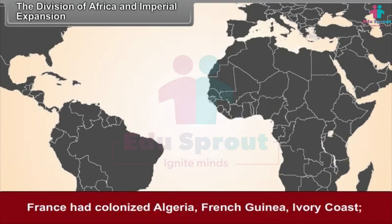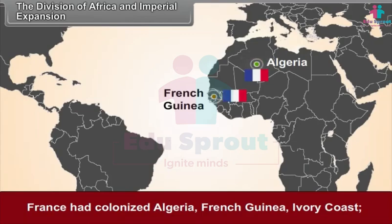France had colonized Algeria, French Guinea, and Ivory Coast, whereas Portugal brought under its control Mozambique and Angola. The status of becoming the first colonizer in the African continent went to Belgium by establishing its colony in Africa in the second half of the 19th century. King Leopold of Belgium erected a colony in the Congo River Basin.